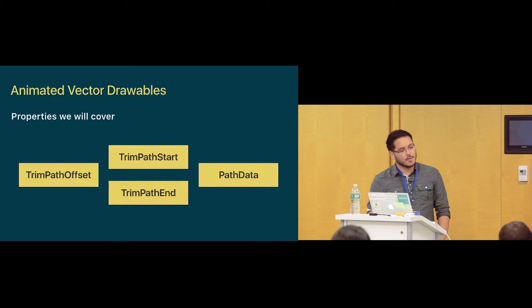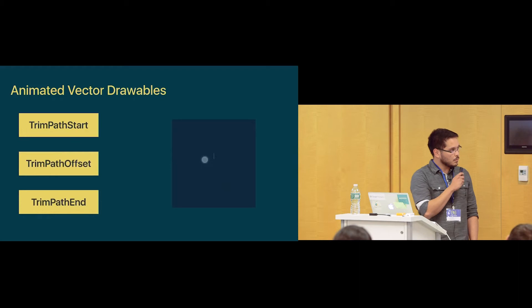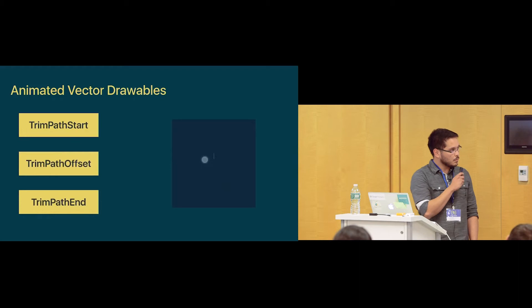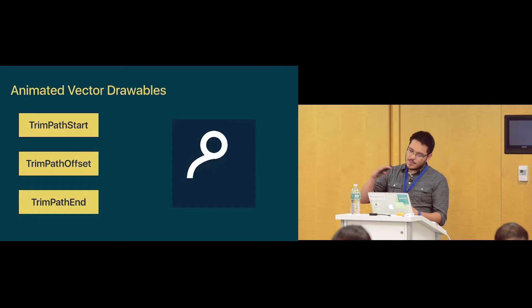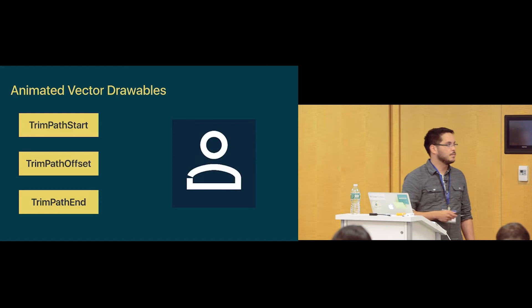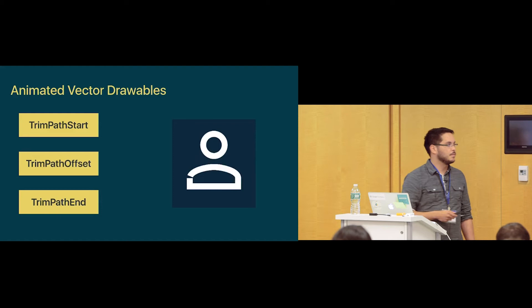Let's start with this example. This is the animation we're going to go through — basically we start drawing at the beginning, the line goes, we finish the drawing, and then it goes away. It's like a pencil drawing on the screen. Everything is done with vector drawables using TrimPath start, TrimPath offset, and TrimPath end.